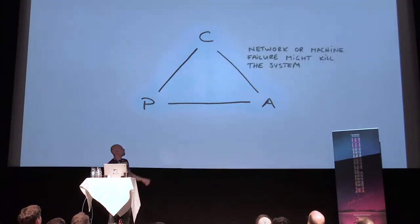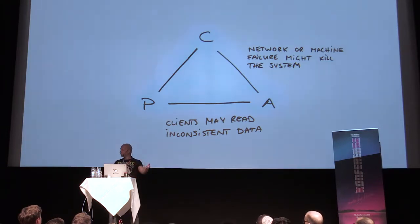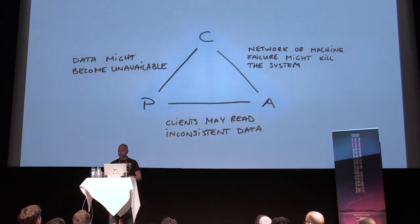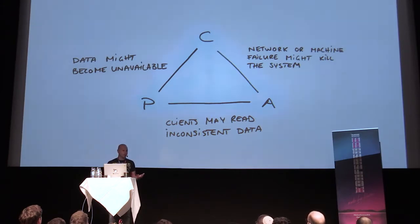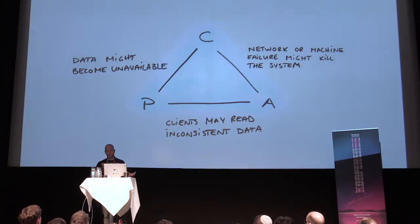Putting it another way: if I choose consistency and availability, that means any network or machine failure might kill my system. If I choose partition tolerance and availability and discard consistency, I might read inconsistent data - I write data in China and it might take a while until I can read it in the States. If I choose partition tolerance and consistency, my data might become unavailable at times. In a distributed system, you're always subjected to partition tolerance, so that's what Brewer meant - you choose consistency or availability because you always have to choose partition tolerance.